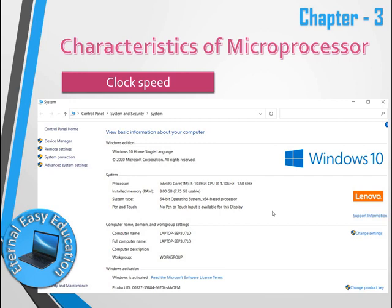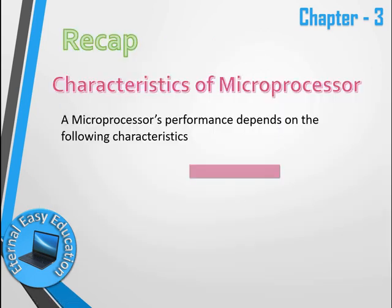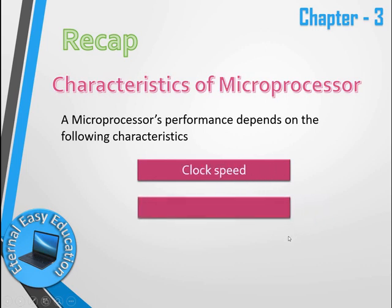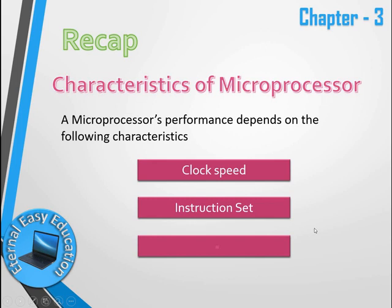To recap: the three characteristics that decide the performance of a microprocessor are clock speed, instruction set, and word size. Clock speed is how fast the microprocessor can execute instructions. Instruction set is what types of instructions the microprocessor can execute. Word size is how many bits the microprocessor can execute in a single instruction.